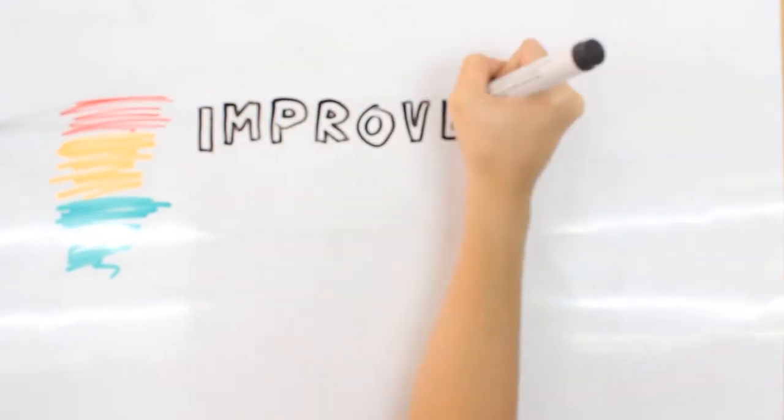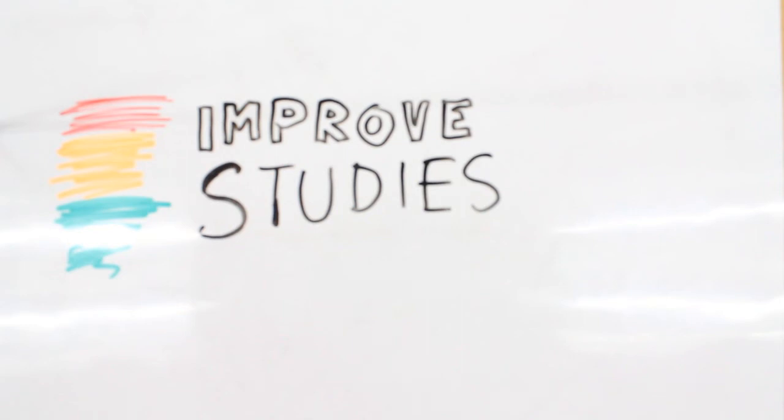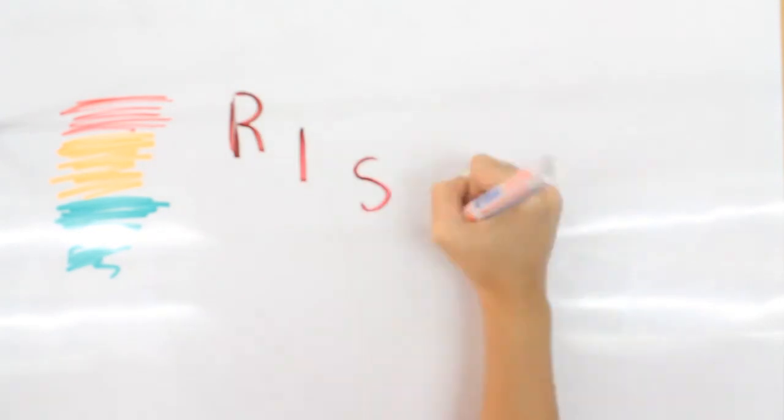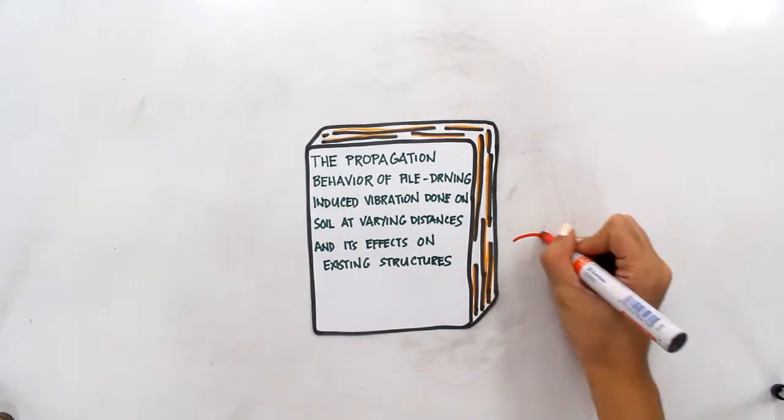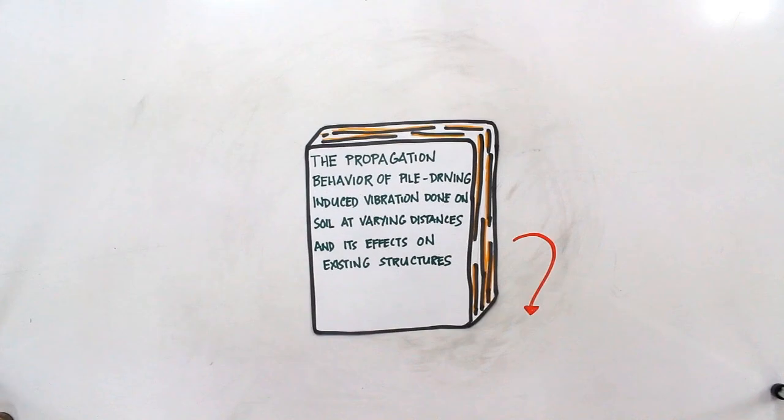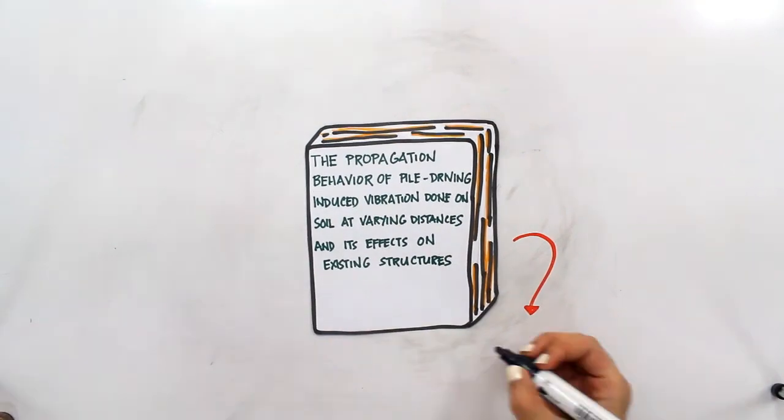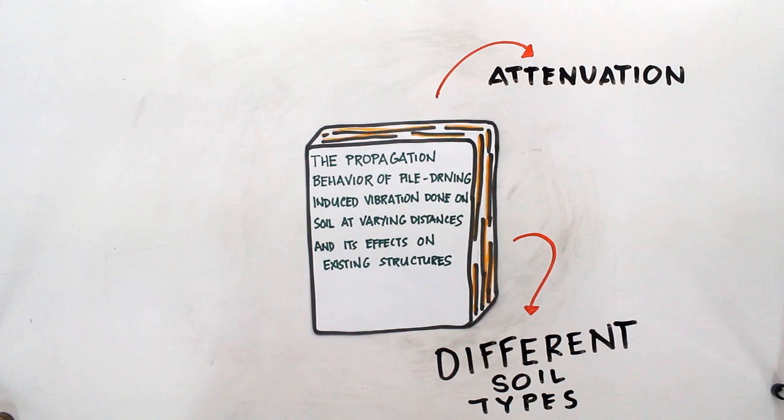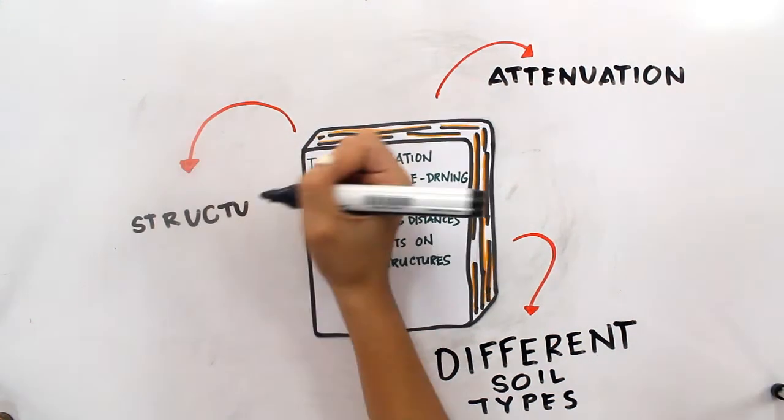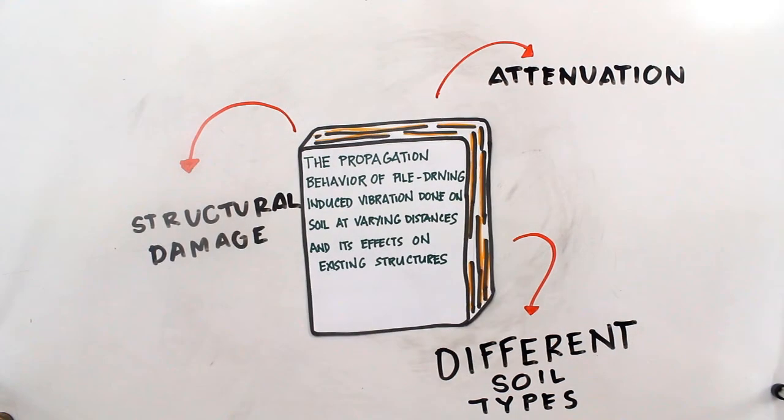There is still the need to improve studies on their application, specifically on the level of risks to damage that it can bring to neighboring structures. The study revolves around understanding the relationship between the influence of different soil types on the attenuation of ground vibrations and the vulnerability of structures within the vicinity of the site to structural damage if exposed to these ground vibrations.